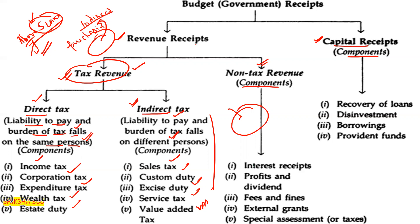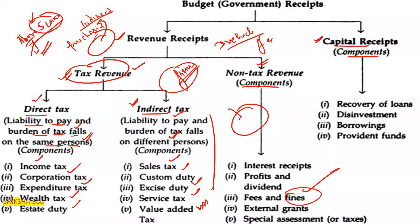Next under non-tax revenue is fees and fines. For example, for the registration of a home or vehicle, we have to pay government fees. The government also collects various types of fines. Additionally, external grants and special assessments all come under non-tax revenue.